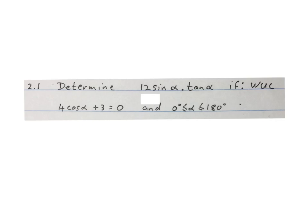This is our first question. Determine 12 sine alpha tan alpha, without using a calculator, if 4 cos alpha plus 3 equals 0 and alpha lies between 0 degrees and 180 degrees included.